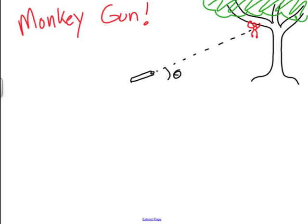Hello everybody. Today we're going to look at something that's a pretty famous physics thought experiment. It's called the monkey gun or the monkey and the hunter, depending on how you've heard of it.